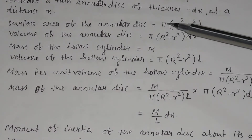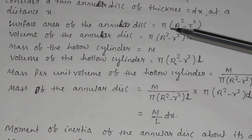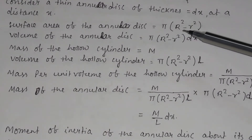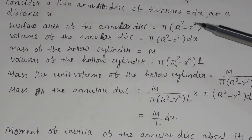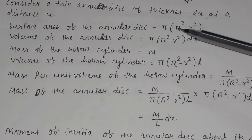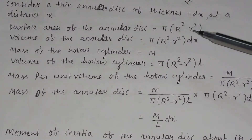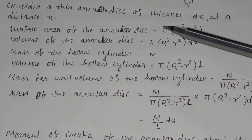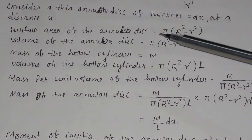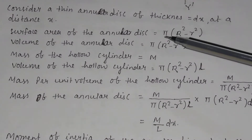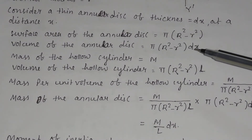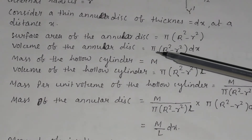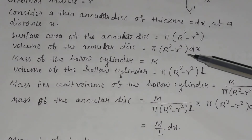The surface area of an annular disc will be equal to π R² minus π r², or π(R² − r²), because the surface area is given by π r². Taking the outer surface area minus inner surface area gives the surface area of the annular disc. The volume of the annular disc will be equal to π(R² − r²) dx, multiplying the surface area by the thickness.